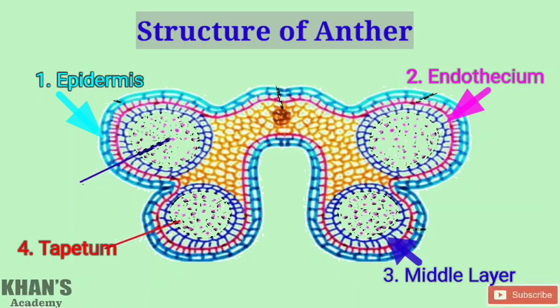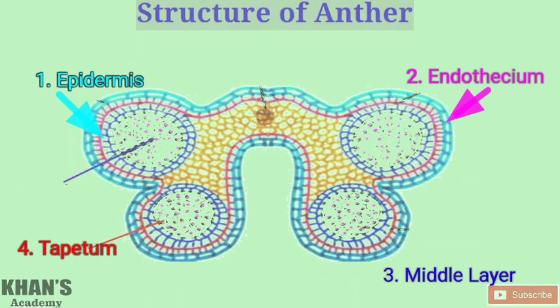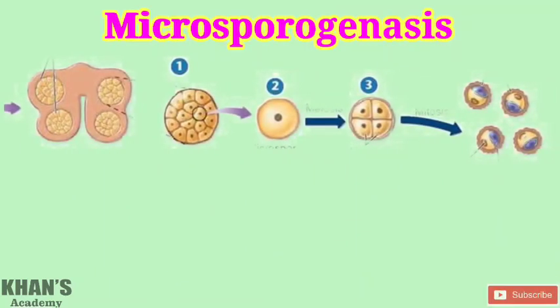Inside these four layers, sporogenous tissue or microsporocyte cells are present, which divide meiotically to form a tetrad of haploid microspores or pollen grains. This process or event is known as microsporogenesis. The result of microsporogenesis is a pollen grain or microspore.